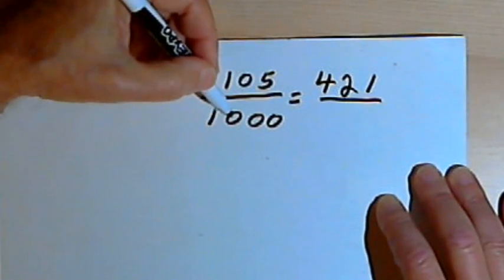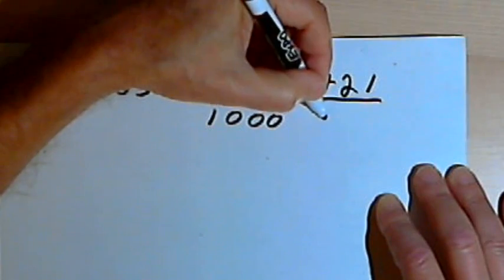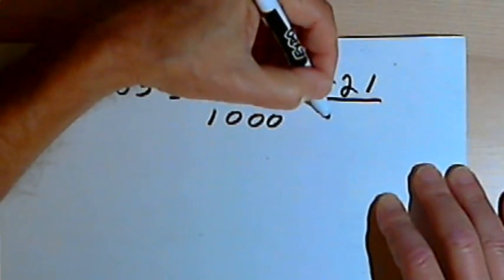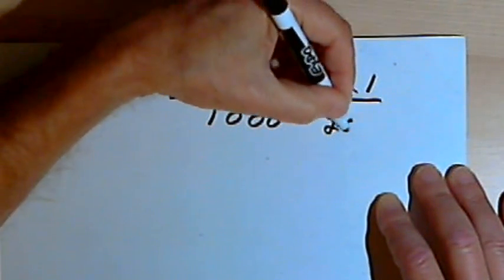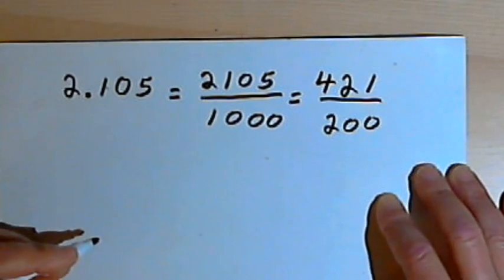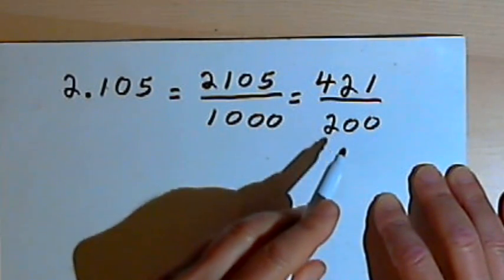And 5 divided into 1000 is going to be, let's see, 5 goes into the 10 part, 2, and then 2 more zeros. So I've got 421 over 200.